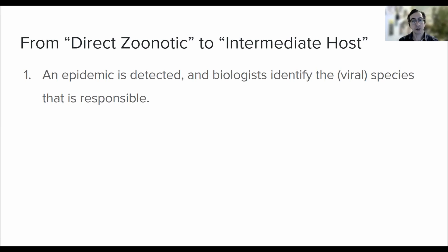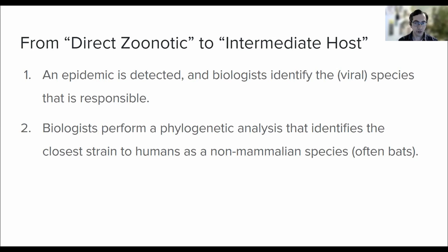First, an epidemic is detected and biologists identify the viral species that is responsible. Second, biologists perform a phylogenetic analysis that identifies the closest strain to humans as a non-mammalian species, often bats. At the time of recording this video, this stage of investigation is where we are currently at with COVID-19.